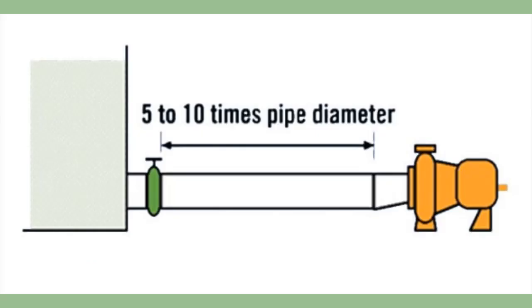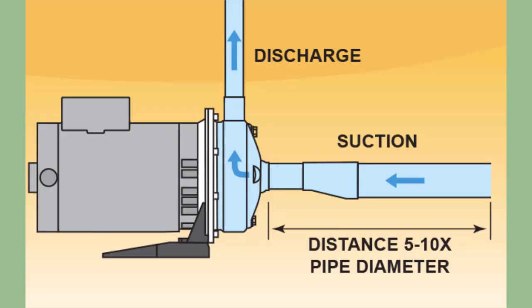Number one, keep suction piping as short as possible. Include a straight run pipe length equal to five to ten times the pipe diameter between the pump inlet and any obstruction in the suction line.